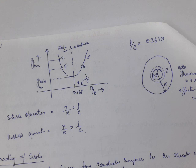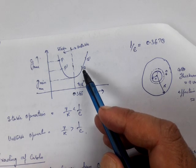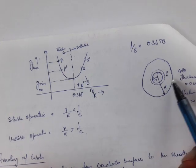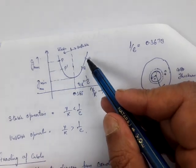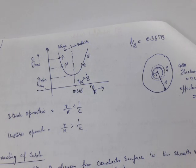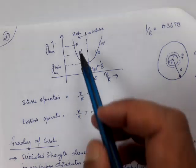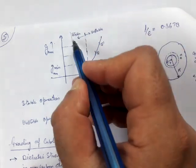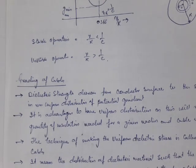However, if the dielectric is operating at point Q in the unstable region, the same increase in r shifts the operating point from Q to Q′, where G_max has increased. The higher stress causes further breakdown of the dielectric, potentially damaging it. Therefore, the stable operating range of the cable corresponds to the stable region of the curve.